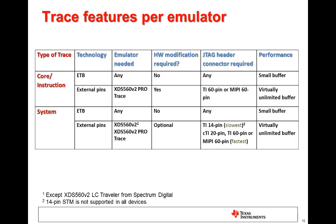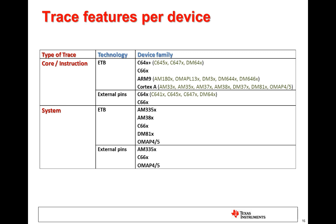This table summarizes the trace features available per emulator family. In summary, the XDS 560 V2 Pro Trace is able to perform any type of trace. The XDS 560 V2 only lacks core pin trace, and all other emulators can do trace only if the device has an ETB. This table shows the features available per device. In summary, all devices that have a C6400, a C6600, or an ARM core have some type of trace, although only the C6000 devices support code trace with external pins. Also, all devices that have an ARM core also have ETB, which automatically allows performing code trace using ETB, but only the most modern ones are also capable of performing system trace.